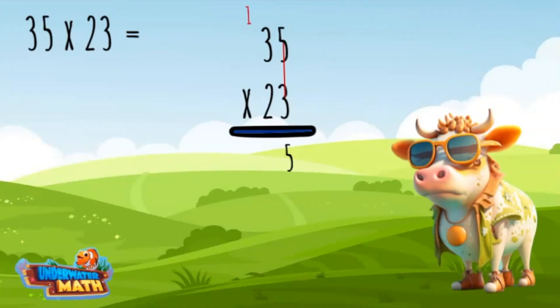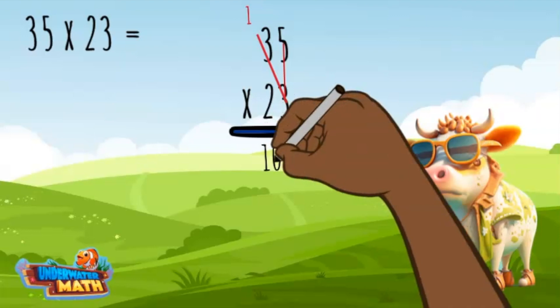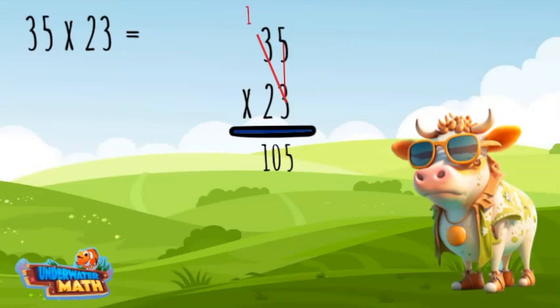Next, we multiply three times three. The answer is nine. Then we add the one that was carried over for ten. The ten is written below the problem. The first portion of our bow tie is complete.